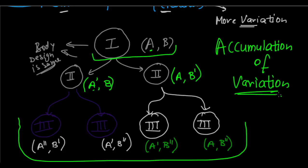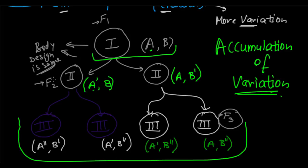There is variation from generation to generation, and there is accumulation of variation in this process. These generations actually have special names: the first generation is called the F1 generation, the second generation organisms are called the F2 generation, and the third generation organisms are called the F3 generation. So it is F followed by the generation number — F1, F2, F3 — and these are going to be important in the coming videos.